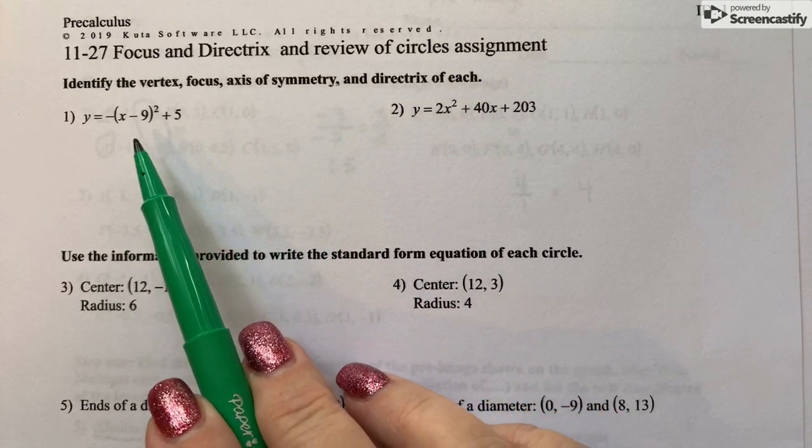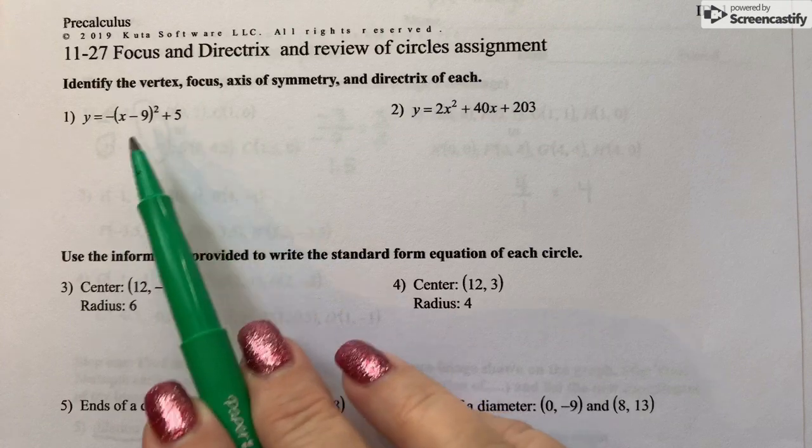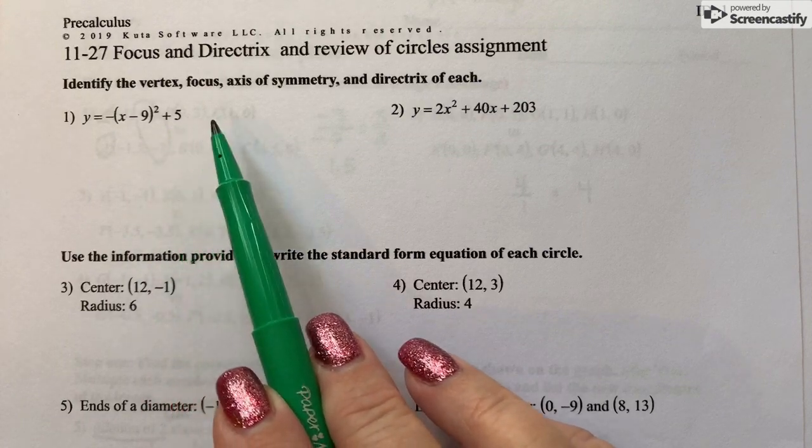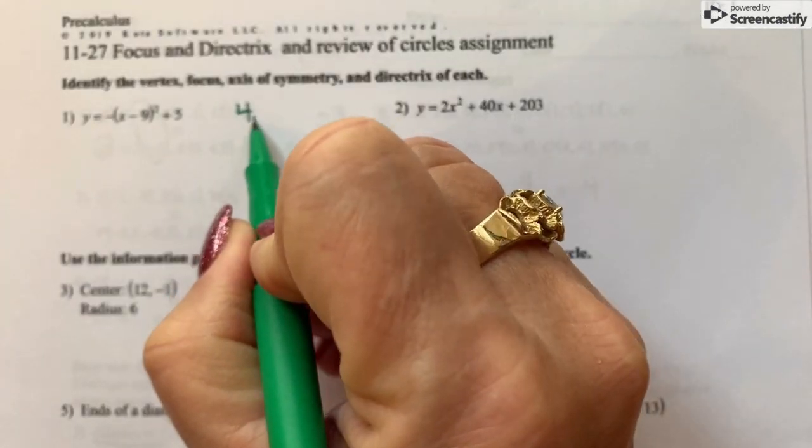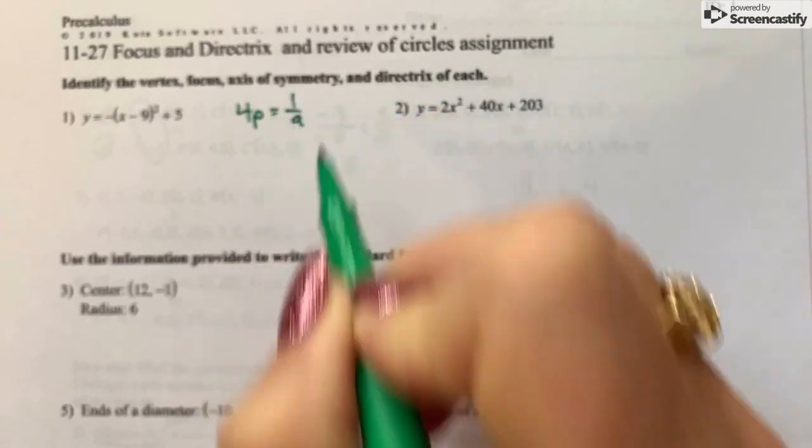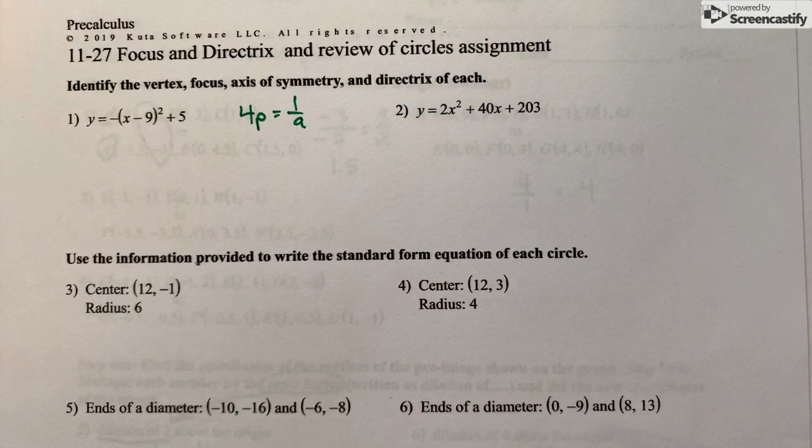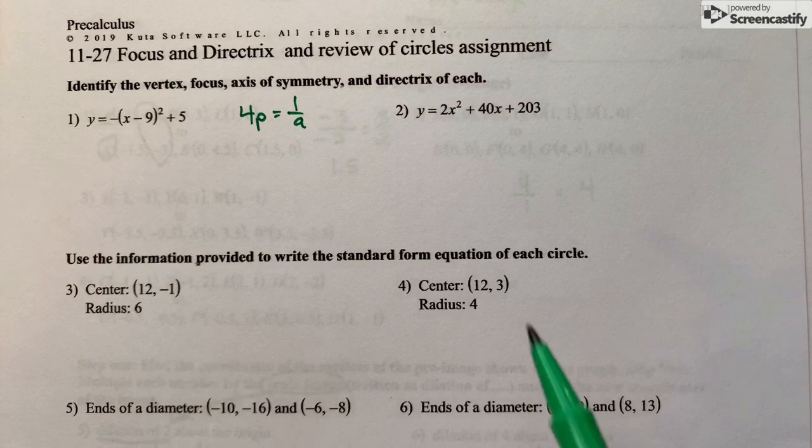On this one, you can find the vertex because it's already in vertex form, and then just use the formula for P equals 1 over A to find your distance P, and then find your focus and directrix off of your vertex.